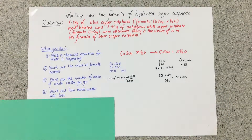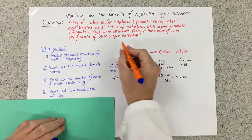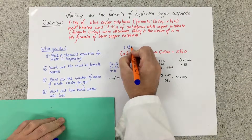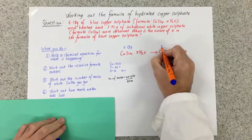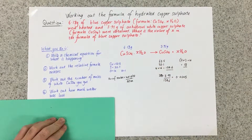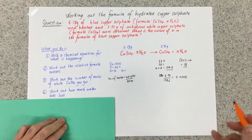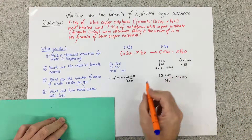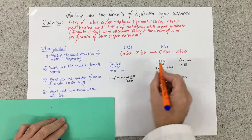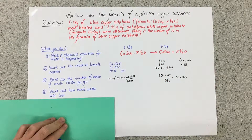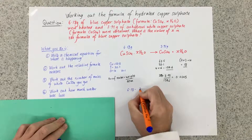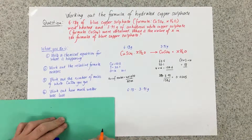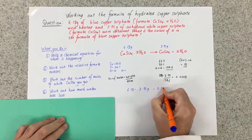Work out how much water was lost. When we started, we weighed the blue copper sulphate and found there were 6.18 grams. At the end we weighed the white anhydrous copper sulphate and found there was 3.91 grams. So the remaining mass — the stuff that's lost — is the water. The water that was lost must weigh the difference between the two. So to work out the mass of water lost: 6.18 minus 3.91 grams gives 2.27 grams.